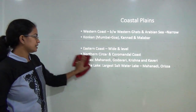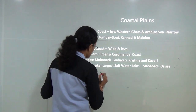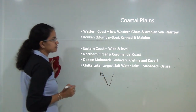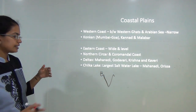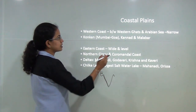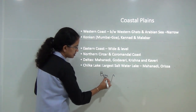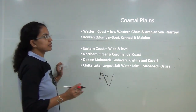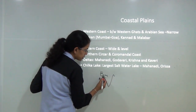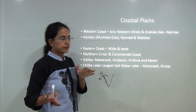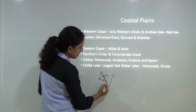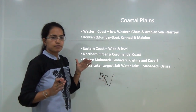Moving to the coastal plains, India has a west coast and an east coast. The western coastal plains lie between the Western Ghats — the Thalghat, Borghat, and Palghat — and the Arabian Sea. They are narrow and fragmented into three sections: the northernmost is the Konkan zone from Mumbai to Goa, then the Kannad zone, and finally the Malabar zone towards Kerala.